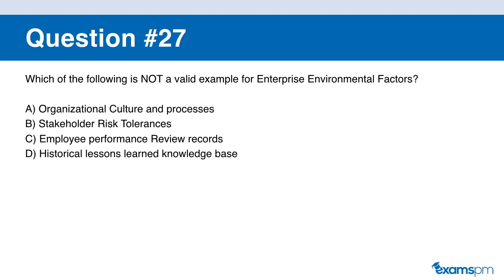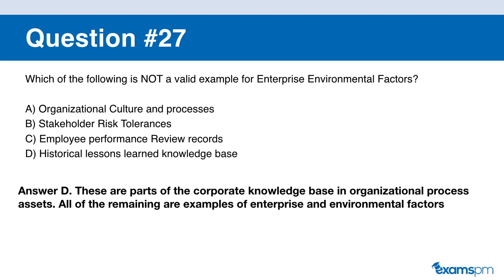Question number twenty-seven. Which of the following is NOT a valid example of enterprise environmental factors? A: organizational culture and processes. B: stakeholder risk tolerance. C: employee performance review records. D: historical lessons learned knowledge base. If you said D, you are correct. All of the above are enterprise environmental factors except for the historical lessons learned knowledge base, which is part of your organizational process assets (OPA), not enterprise environmental factors.